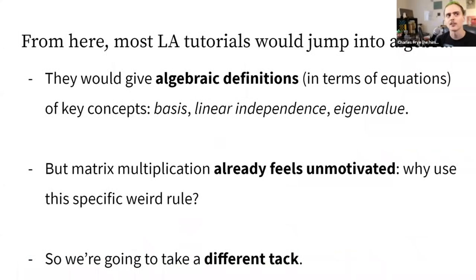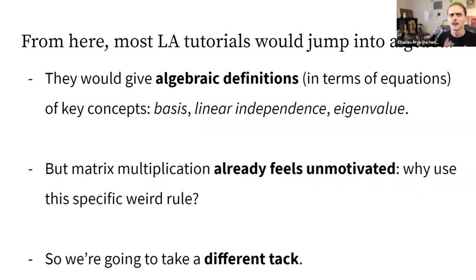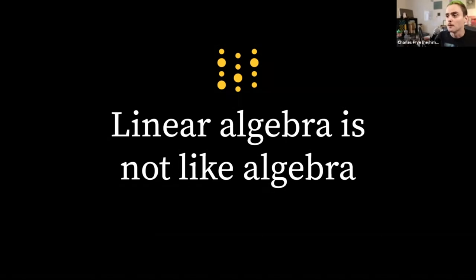It's a relatively simple rule given how many things it's capable of doing, but it's also a kind of weird and specific rule. If someone just told you 'here's how we're going to combine collections of numbers,' there's no obvious reason why you'd do it that way. Many linear algebra tutorials jump straight into algebraic definitions, manipulating equations and matrices — but I don't think that's the right approach.